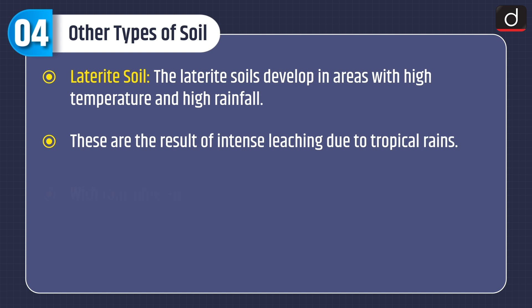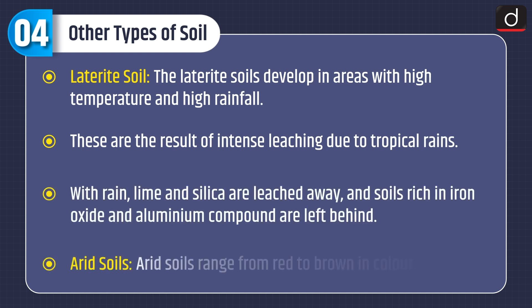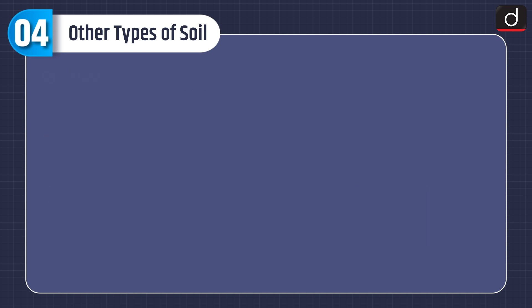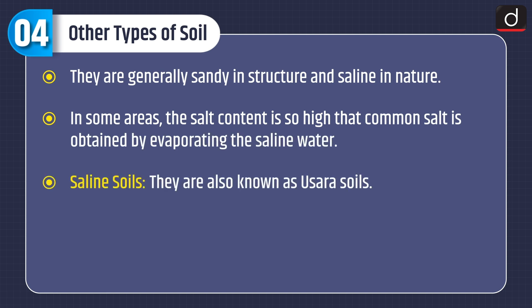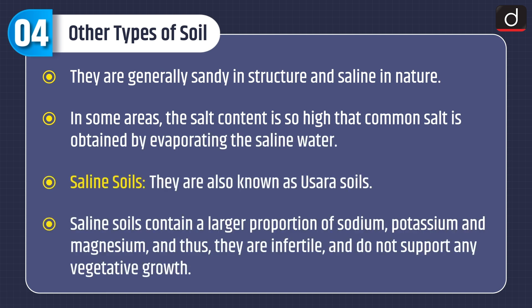Laterite soil develops in areas with high temperature and high rainfall. These are the result of intense leaching due to tropical rains. With rain, lime and silica are leached away and soils rich in iron oxide and aluminium compound are left behind. Arid soils range from red to brown in color. They are generally sandy in structure and saline in nature. In some areas, the salt content is so high that common salt is obtained by evaporating the saline water.